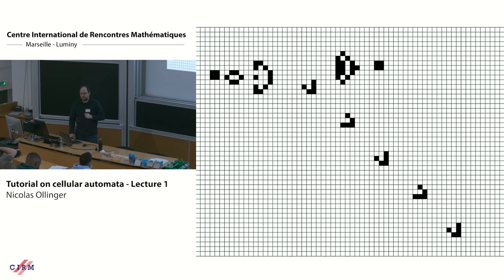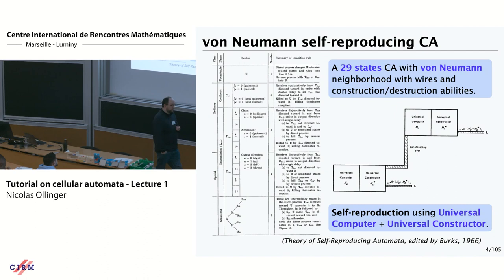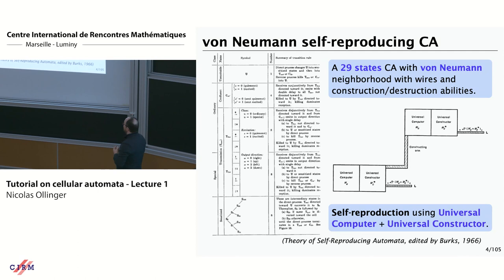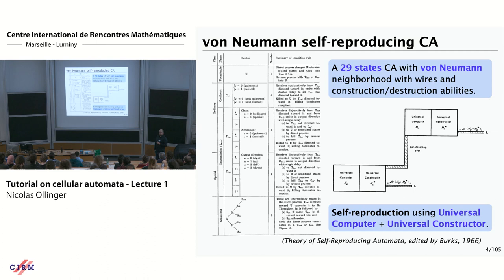Von Neumann constructed some very complicated machines, and in cellular automata it is also the case. If you want to read about his particular self-replicating automaton, there is a posthumous book of a few hundred pages that describes the rule and the construction. Nobody has seen the complete machine working because it would require a very huge amount of time just to make one iteration. It has as many as 29 states.